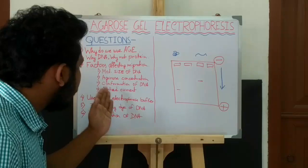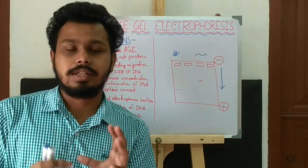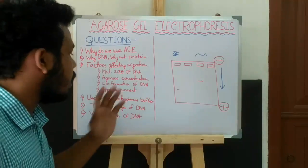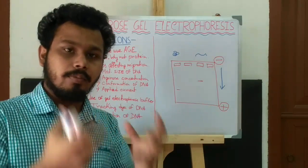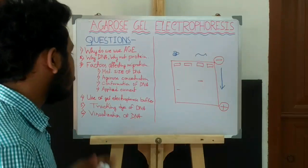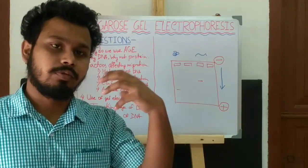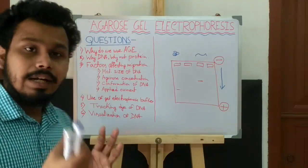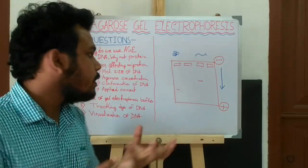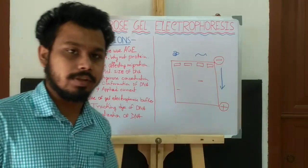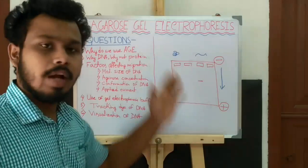What is the effect of applied current on DNA migration? The rate of DNA migration is proportional to the applied current — if we increase the current, migration will be faster. However, if the current is increased too much, it generates heat in the agarose gel which will liquefy the agarose and hamper the electrophoresis. So we have to use a considerable and controlled amount of current to run agarose gel electrophoresis.